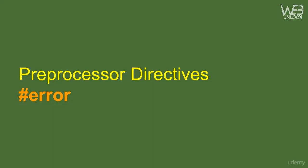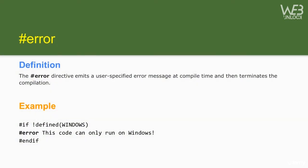The #error preprocessor directive emits a user-specified error message during compilation and then stops compilation immediately. For example, if your code only runs on Windows: #if !defined(WINDOWS) — #error This code can only run on Windows — #endif. The preprocessor starts preprocessing, finds the #if statement, and if WINDOWS is not defined (e.g., compiling on Mac), it shows that error message as part of the compilation output and stops compilation right there.